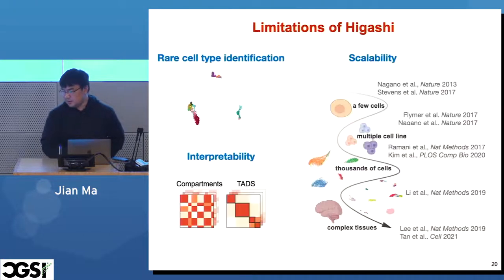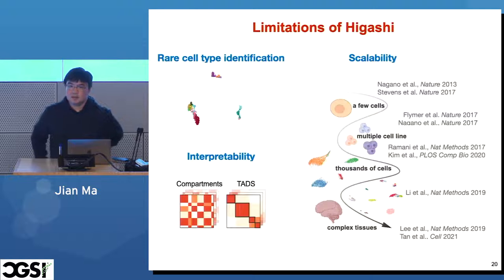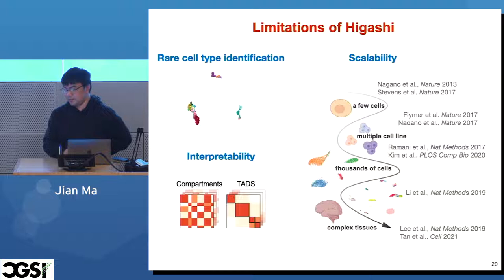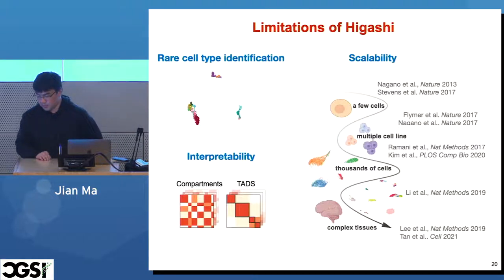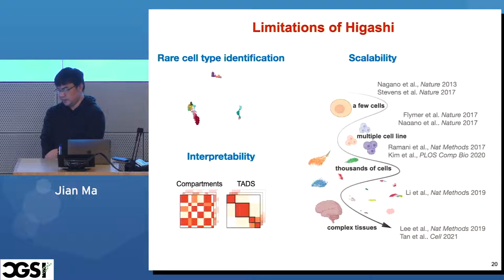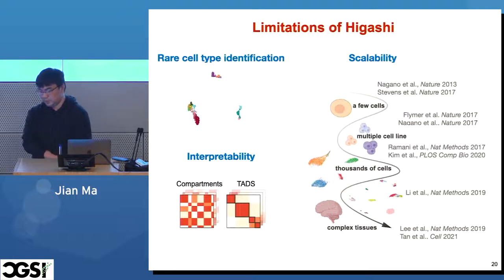What are the limitations of Higashi? First, for some rare cell types, identifying their subtypes remains challenging. Second, as a neural network-based approach, interpretability is always a roadblock — it's not always clear why the model is working well for a given dataset. Third, scalability is an issue. For complex tissues you may have millions of cells, and the method really needs to be scalable to handle these large-scale datasets to be truly useful.